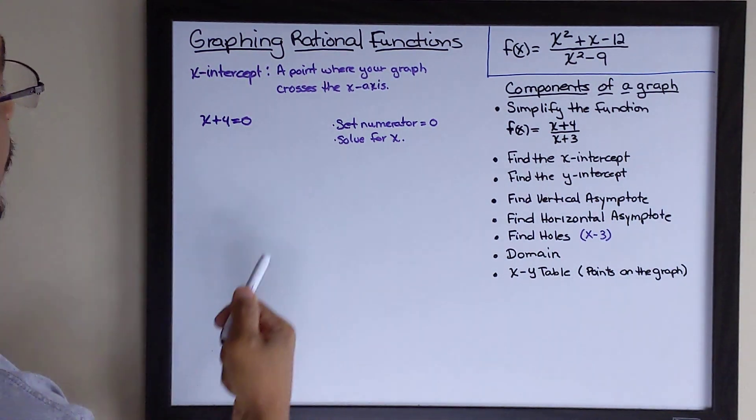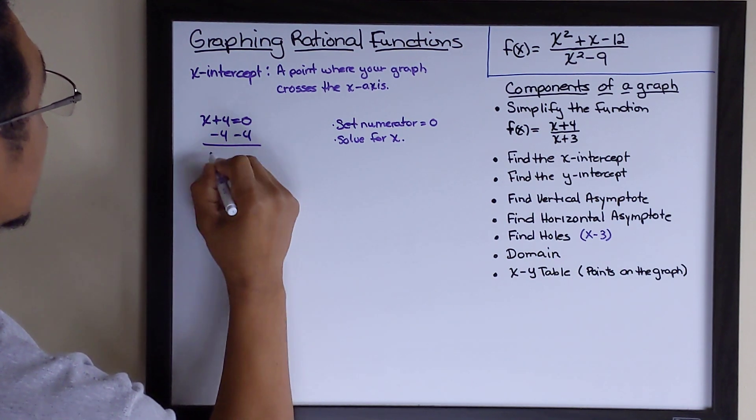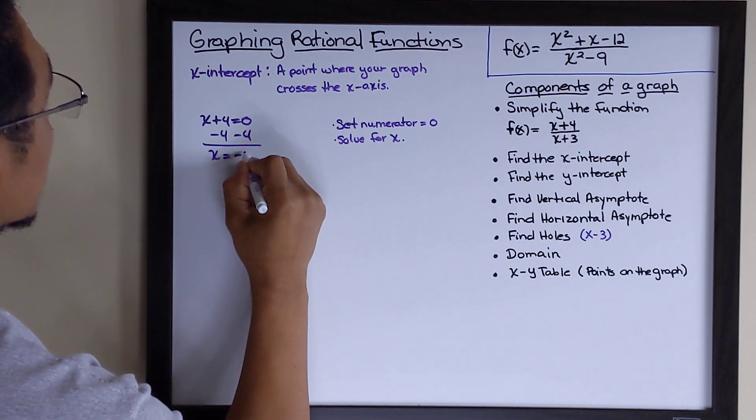Now that we've done that, we simply solve for x. Subtract 4 from both sides. x is equal to negative 4.